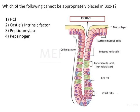Which of the following cannot be appropriately placed in box 1? Looking at the options, we have HCl, K cells, intrinsic factor, peptic amylase, and pepsinogen.